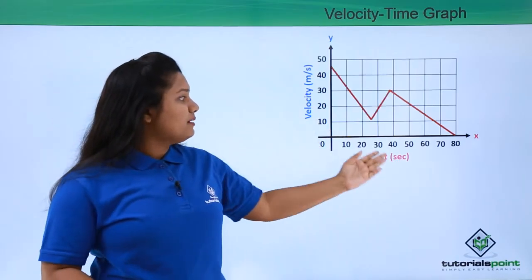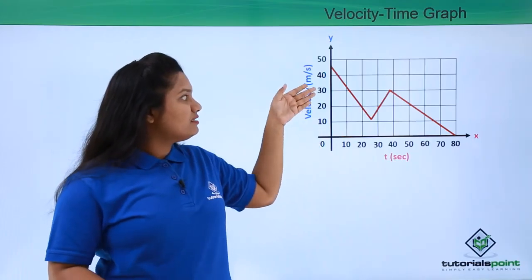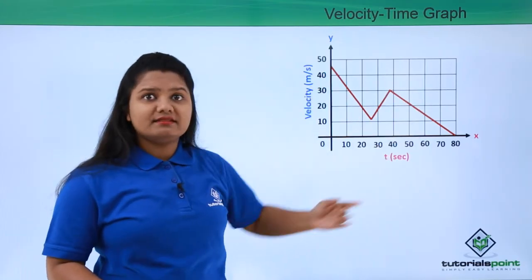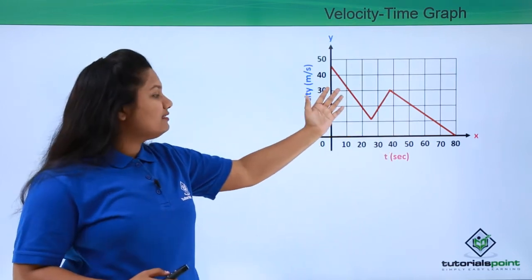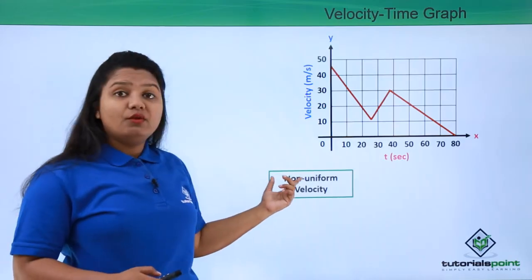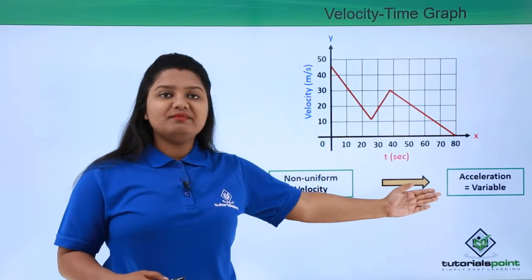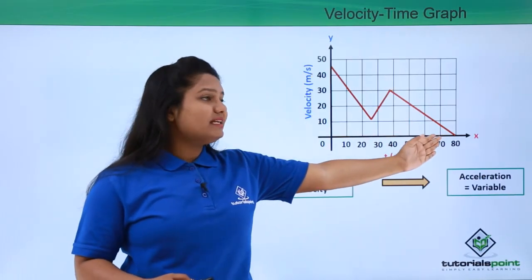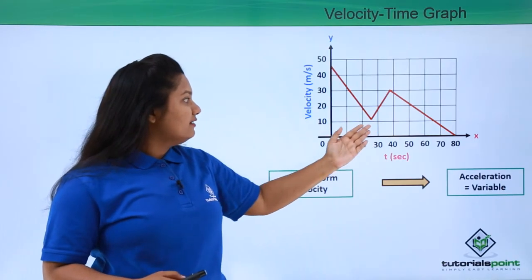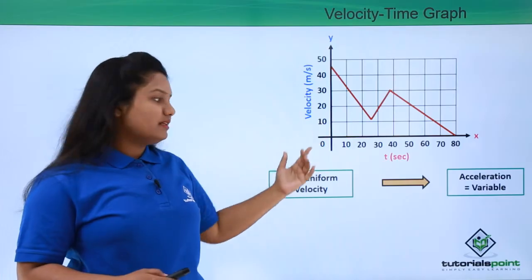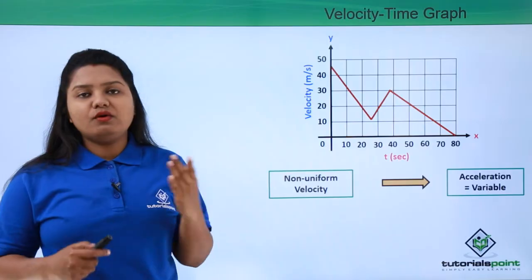Now let us consider a velocity-time graph of a different kind — one that is not a straight line and shows no consistent parallel, negative, or positive slope. It is all mixed up. In this case, the body is moving with non-uniform velocity and the acceleration is also variable, since it is not a straight line throughout. So from such a graph we can infer that the body has non-uniform velocity with variable, non-constant acceleration.